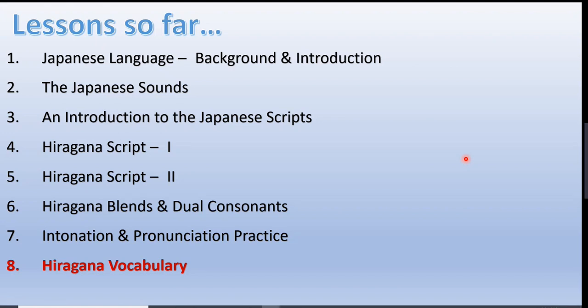Before starting today's lesson, let's quickly summarize what we have learned so far. The first three lessons were introductory in nature — the first gave background and introduction to Japanese language, the second discussed sounds in Japanese, and the third covered the origin and evolution of Japanese scripts. From the fourth lesson we started learning the hiragana script and by the end of lesson six we were done with it. Lesson seven was related to pronunciation practice and some insights into the importance and significance of intonation in Japanese.